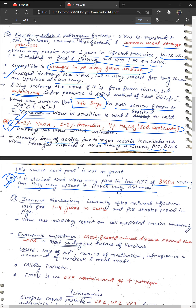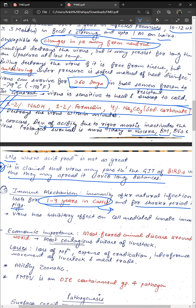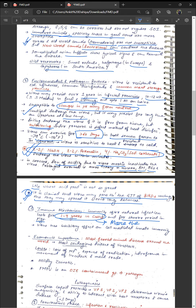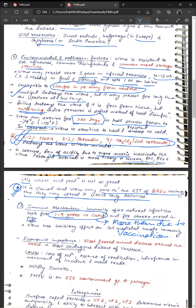Regarding immune mechanisms: immunity from natural infection persists for one to four years in cattle and for a shorter period in pigs. The period of immunity from natural infection is much longer than that from vaccination. Vaccination provides immunity for almost up to one year, requiring biannual vaccination.